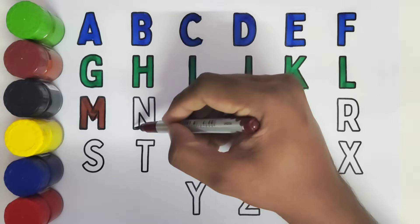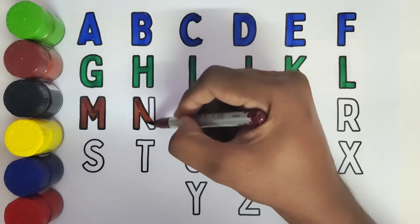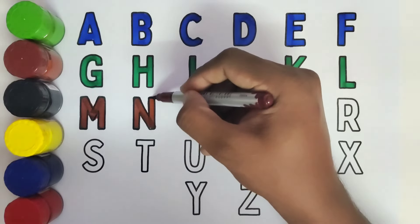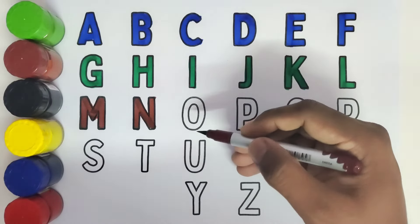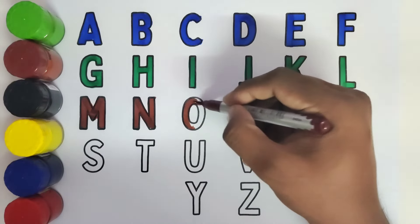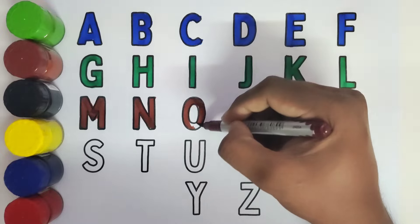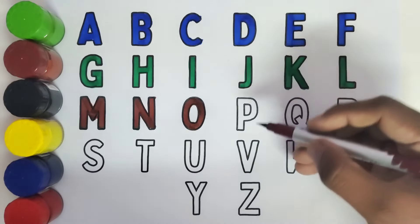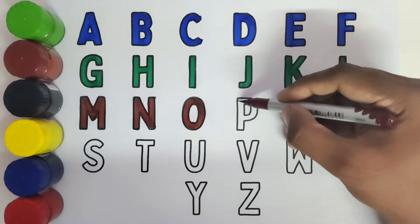This is N. N for Nest. This is O. O for Owl. This is P. P for Pigeon.